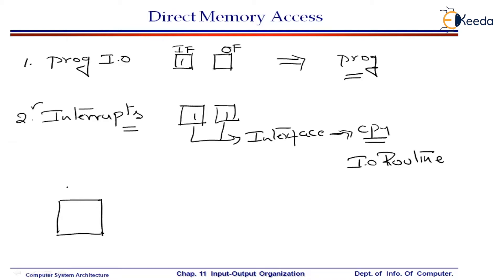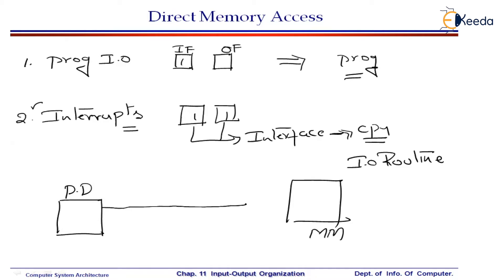There is a peripheral device and there is a main memory. When you recollect what has been happening during this transfer, the transfer has to happen only between the peripheral device and the main memory. Many times, whenever an I/O device wishes to make a transfer, it has to be to and from main memory. If it is an input transfer, the transfer goes from input device to main memory. If it is an output transfer, the transfer goes from main memory to the output device. So the transfer should be exclusively between the peripheral device and main memory.